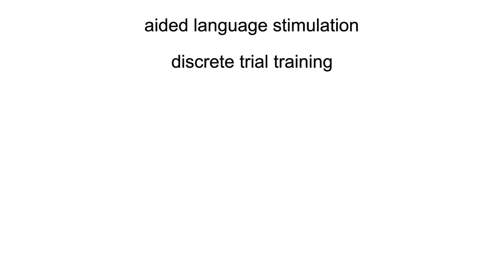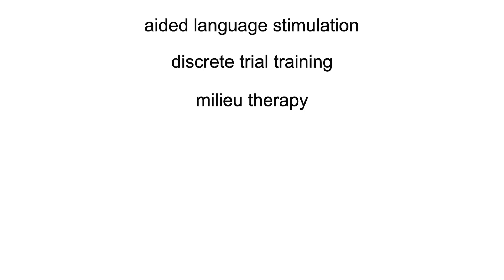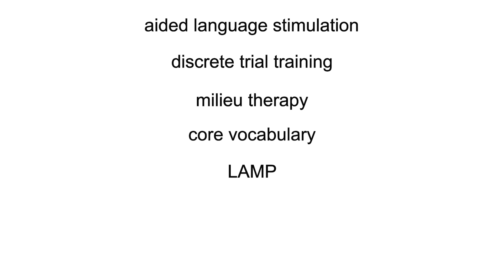Discrete trial training, which is reminiscent of ABA. Milieu therapy, often used with young children. Core vocabulary, which is very popular in the AAC world. Language Acquisition through Motor Planning, also known as LAMP — I'm a big fan of LAMP and love their app. Mentoring programs, which would be awesome for pairing early AAC learners with individuals who are proficient — I think that could be really incredible. And finally, the Picture Exchange Communication System, also known as PECS, used a lot with preschool-aged children, especially those with autism. If done correctly, the results can be magical — I am a big fan.